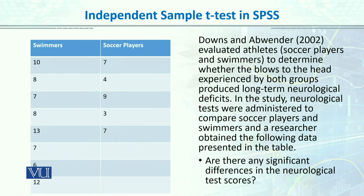Here is an example of an independent sample t-test. Downs and Abwender (2002) evaluated athletes — soccer players and swimmers — to determine whether blows to the head experienced by both groups produced long-term neurological deficits. Neurological tests were administered to compare the two groups, and the data is presented in the table on your left. The research question is: are there any significant differences in the neurological test scores? The dependent variable is scores on the neurological test, which is a continuous interval-scale variable, and the independent variable is the two groups.